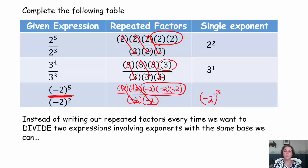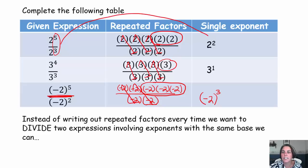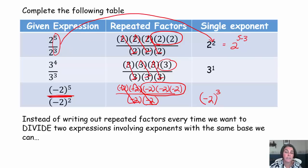Now we need to ask ourselves: is there a more efficient way than writing out all of these repeated factors? Well, I take a look at my five and my three and say: what can I do with five and three to get to an exponent of two? You'll notice my base of two remained the same. How can I take five and three to get to two? You can take five minus three to get to two. If I subtract those exponents and keep my base, I will be able to simplify that expression much more efficiently.